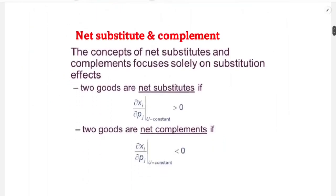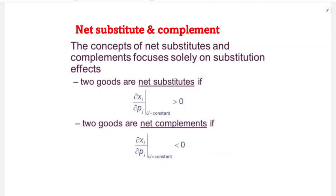The concept of net substitute and net complement focuses solely on the substitution effect — the income effect is not considered. By holding utility constant, we can determine whether two goods are net substitutes or net complements.